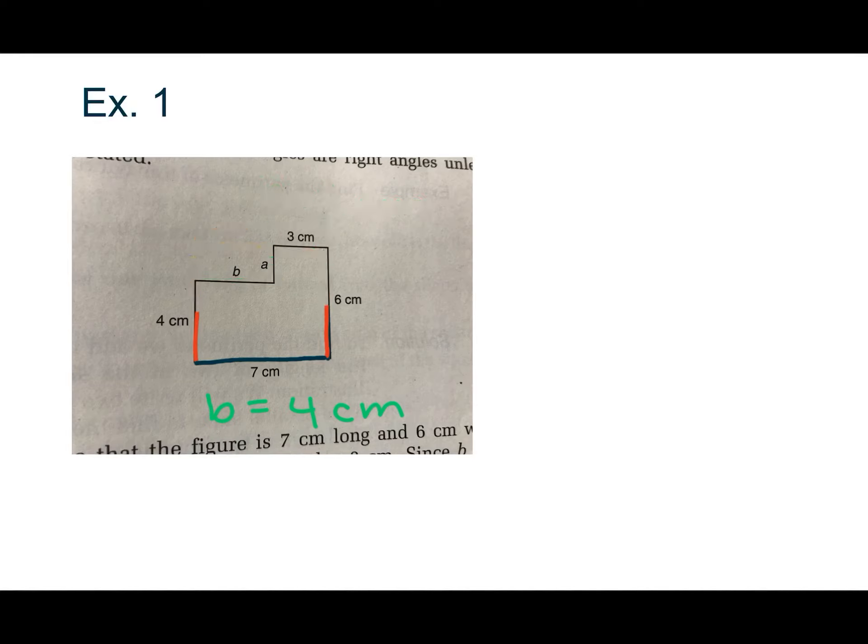I'm just going to erase all of this. And I'm going to label my sides that were not marked. This is 2 centimeters. And this is 4 centimeters. All right, so we can get started in finding the perimeter.